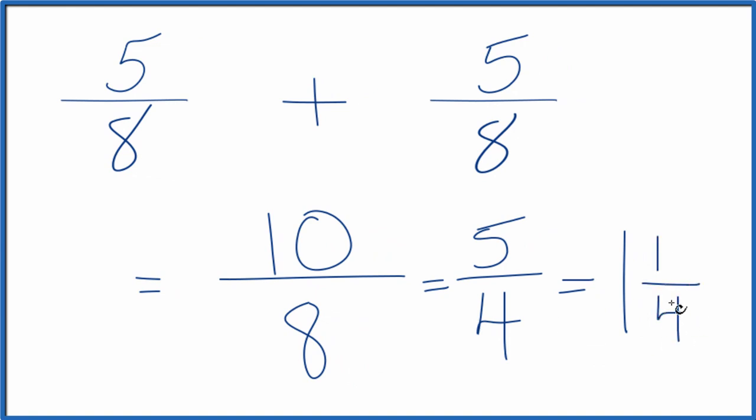We just keep that the same. You can check that. 1 times 4, that's 4, plus 1, that gives us the 5. And then we just kept the denominator the same here.